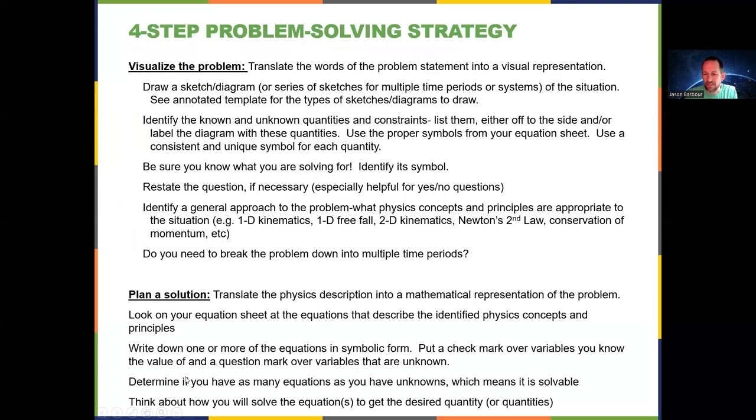Okay. So one of the keys for figuring out if your plan is good is, do you have as many equations as you do unknowns? If you do that, then it is solvable. Maybe you have the skills to solve it. Maybe you don't. Maybe solving two equations that have two unknowns in each one is too difficult for you. I can help you with that.